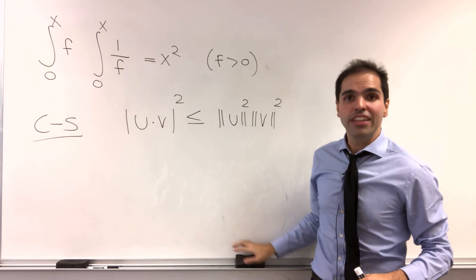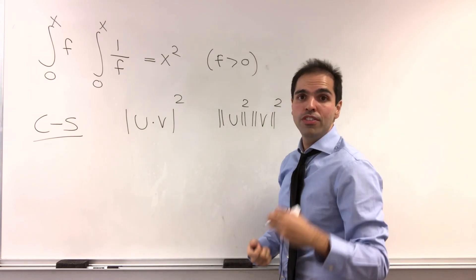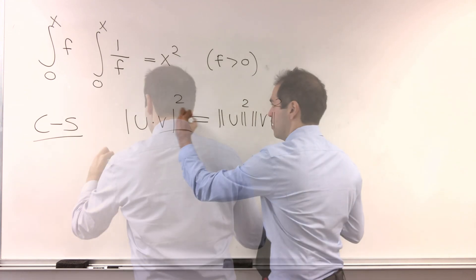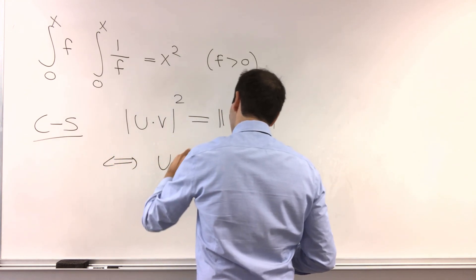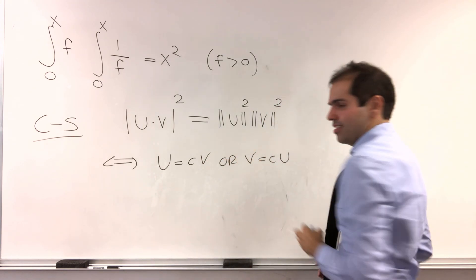Namely, if we have equality, then u has to be a multiple of v, or vice versa. So u is a multiple of v, or v is a multiple of u.